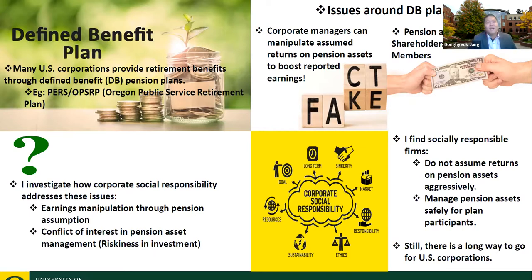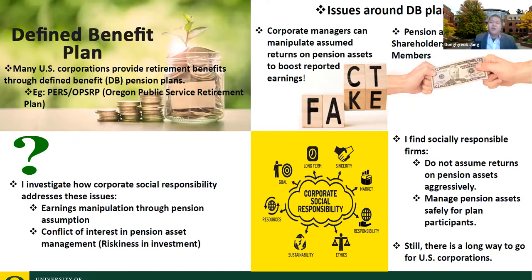Over the last two decades, corporate social responsibility has been an important part of U.S. firms' operations. CSR is fundamentally about social goodness that companies do to bring welfare to society and a broad range of stakeholders. I ask whether socially responsible firms engage in earnings manipulation through aggressive pension assumptions and whether they manage pension assets in the interest of plan participants. By measuring firm-level CSR performance with ESG ratings, I find that socially responsible firms have significantly less assumed returns — so they are not likely to manipulate earnings — and that these firms safely manage pension assets in favor of plan participants rather than shareholders.